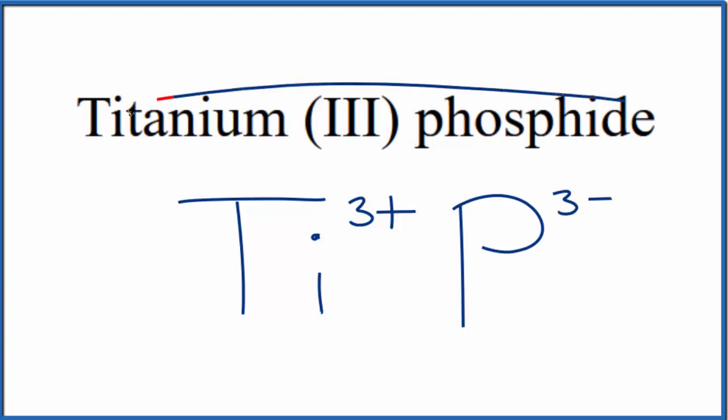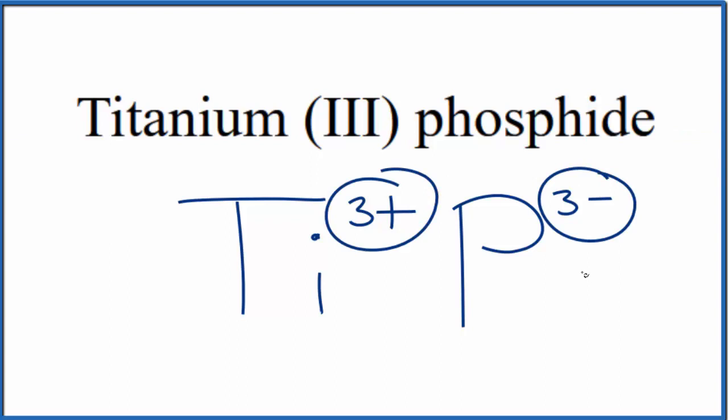And since titanium three-phosphide is neutral, doesn't say ion after it, these charges need to add up to zero, give us a net charge of zero.